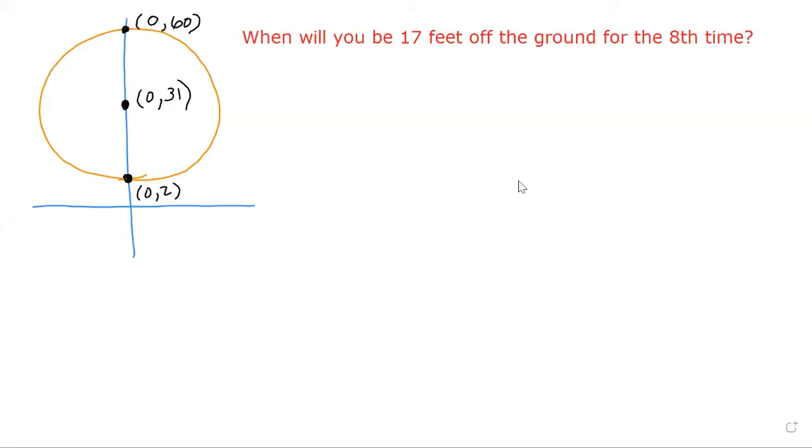So going back to this Ferris wheel, we want to be 17 feet off the ground for the eighth time. Let's say that's 17 feet and we can get there in more than one location. We can accomplish that here or possibly there. Now we do want to be there for the eighth time.